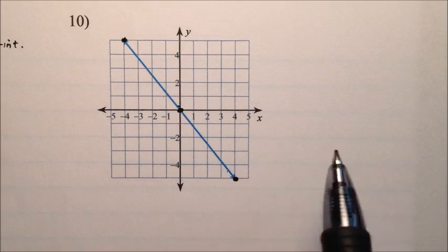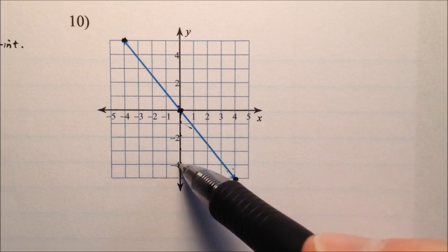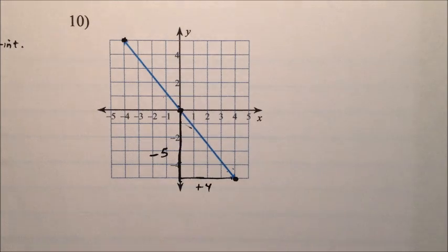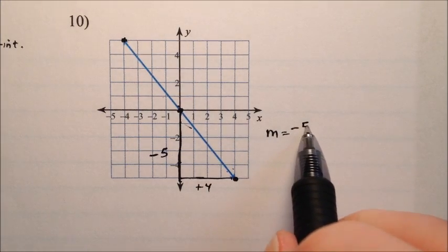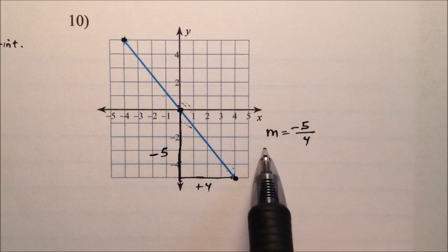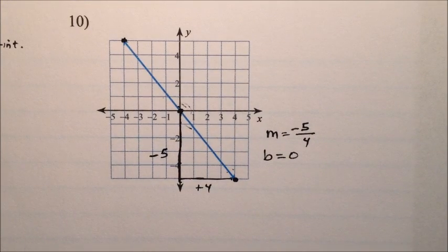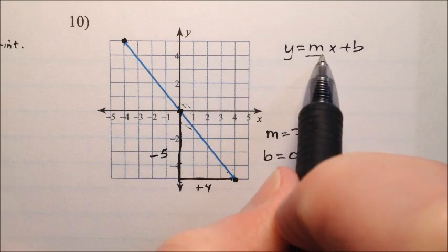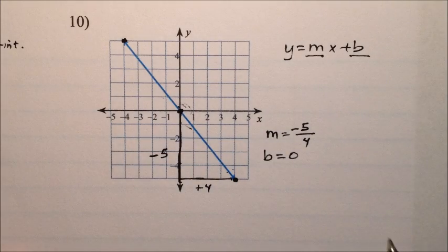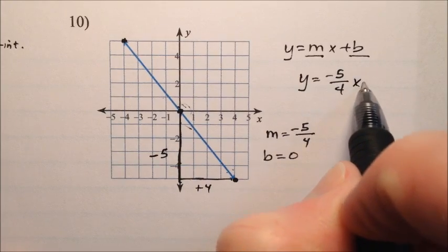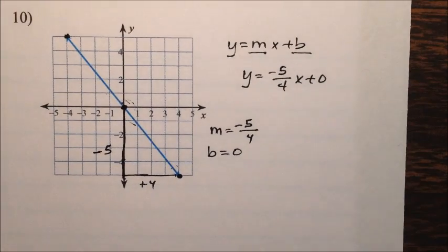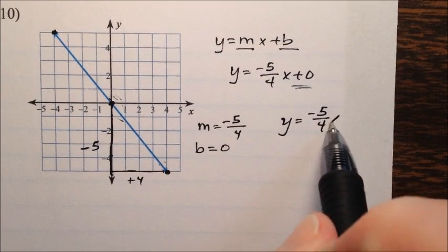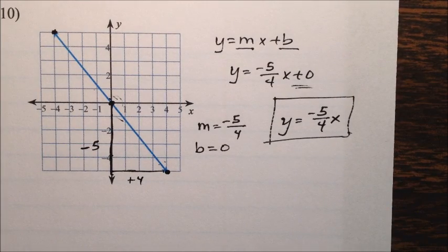We have 3 points to choose from. Going from one point to another, we go down 5 and over 4. So I know my slope is going to be negative 5 fourths. And from the origin, I know my b value, or y-intercept, will be 0. Putting it in y = mx + b form: y = -5/4 x + 0. But whenever we have plus 0, we just leave it off. So we write y = -5/4 x, and that is the equation of this line.